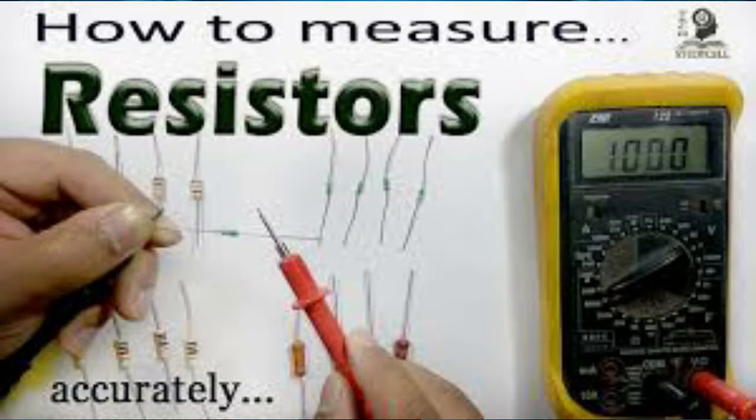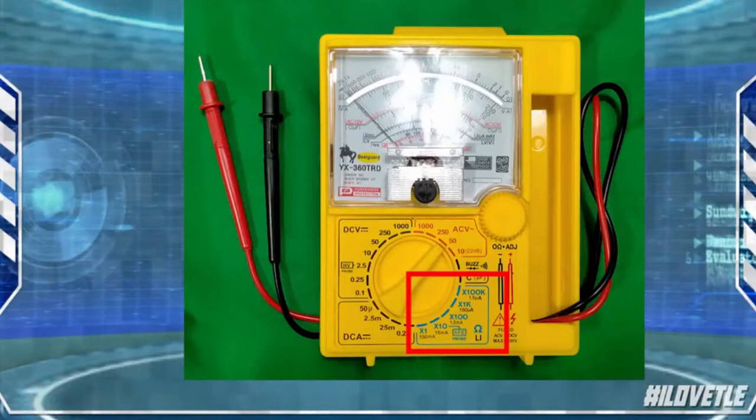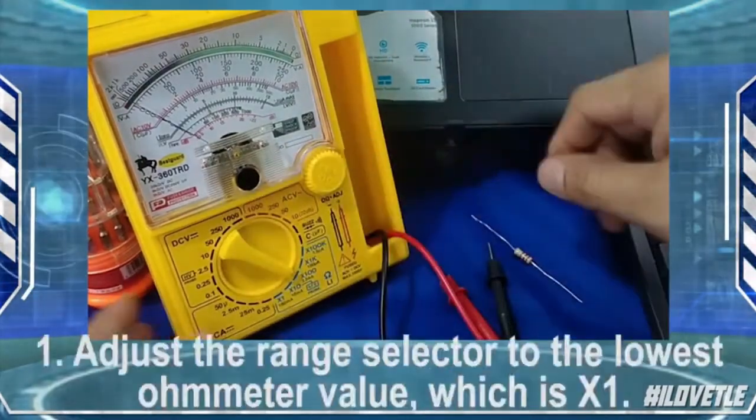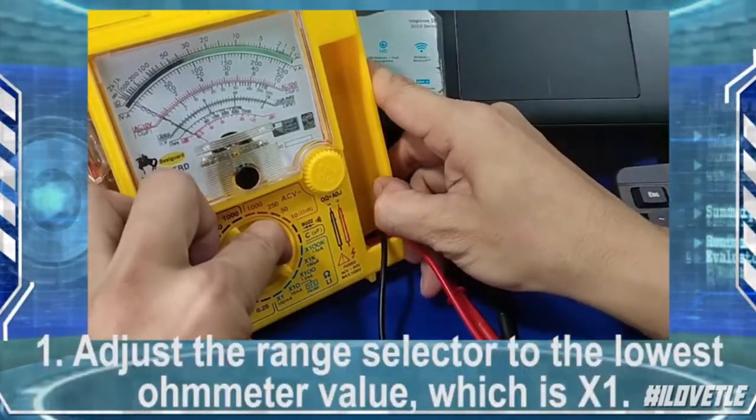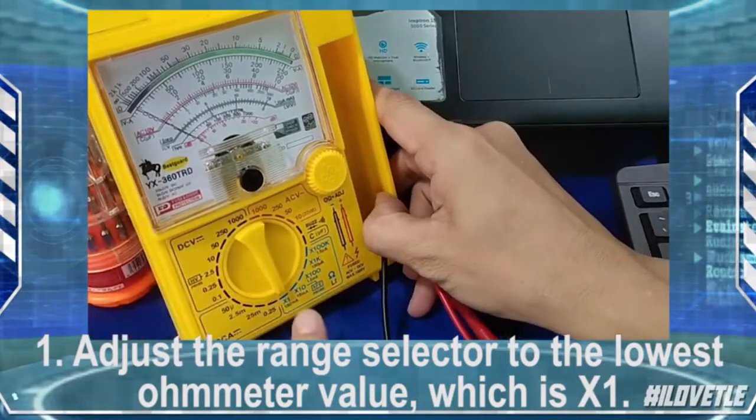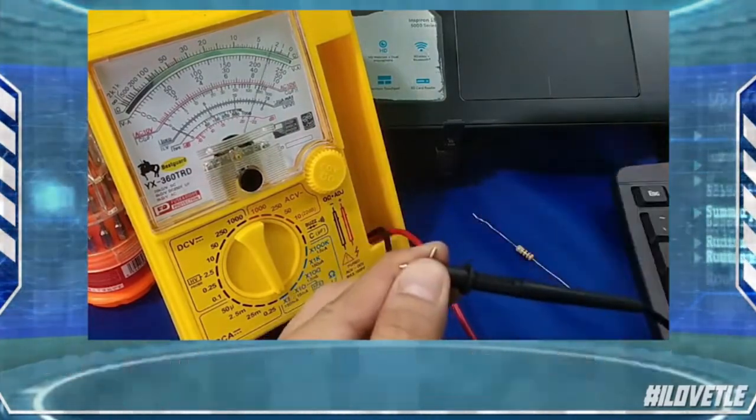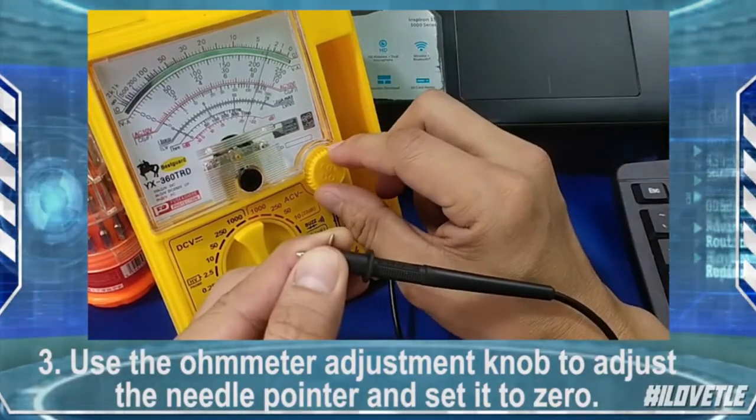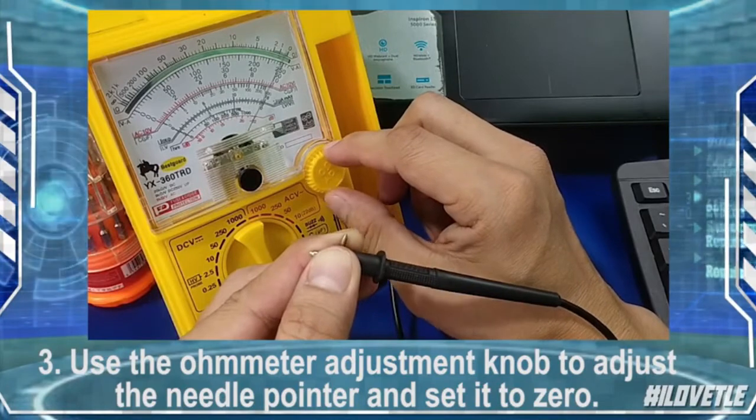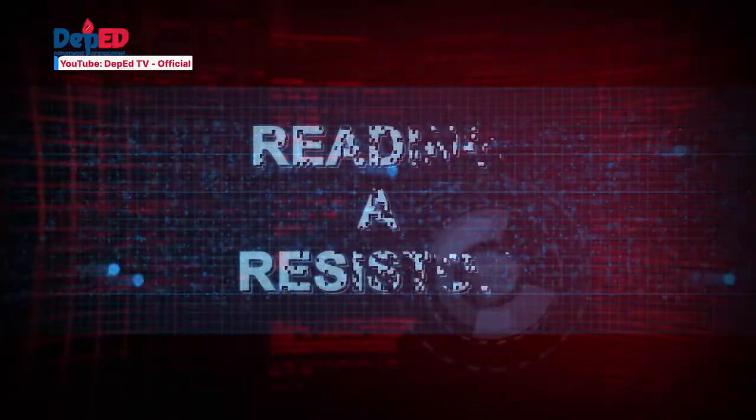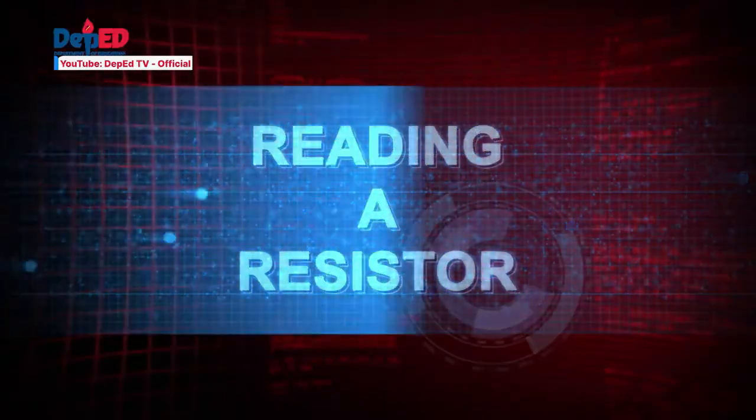Resistance is measured with an ohmmeter and is represented by an omega symbol. When using an analog multitester to measure resistance, it is necessary to calibrate the multitester first. In calibrating the multitester for measuring resistance, do the following: Step 1, adjust the range selector to the lowest ohmmeter value which is x1 or times 1. Step 2, connect the test probe pins together. Step 3, use the ohmmeter adjustment knob to adjust the needle pointer and set it to 0. Step 4, you may now begin testing a resistor.